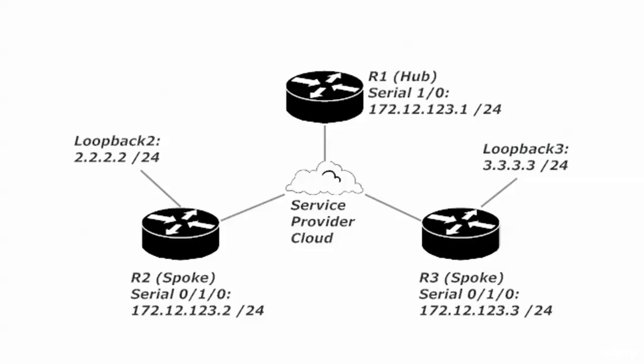Speaking of labs, this is where we'll start with RIP. We've got our 172.16.123.0/24 network running on the serial interfaces on all three routers — our frame relay cloud, which we're not configuring because that's our service provider. Routers 2 and 3 have loopback interfaces; router 1 doesn't yet. We'll be adding and subtracting loopback interfaces across labs, but the serial connections will always be there. Go ahead and jot this down, and when we meet at the beginning of the next video, we'll jump straight into a RIP configuration.